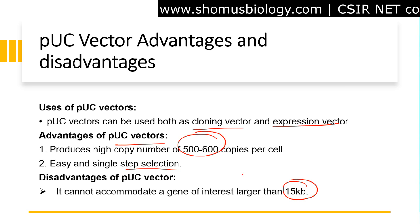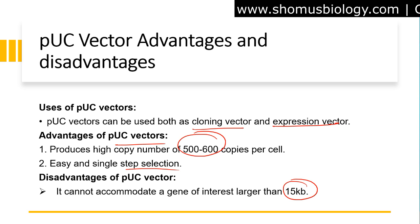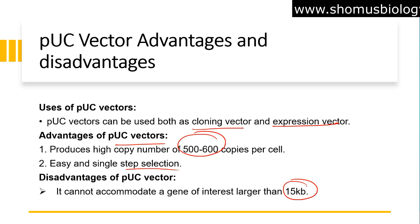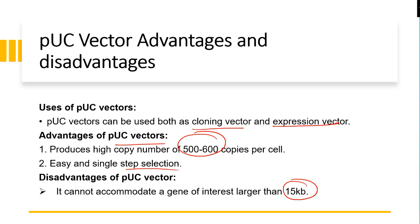The disadvantage is the insert size — it cannot accommodate a gene more than 15 kb. That is one big disadvantage for pUC19. Rest is very similar to pBR322. These plasmid vectors are very useful when your insert size is small. You can use pUC vector and obviously grow it in the host cell, which is E. coli bacteria. That's all about the pUC vector.